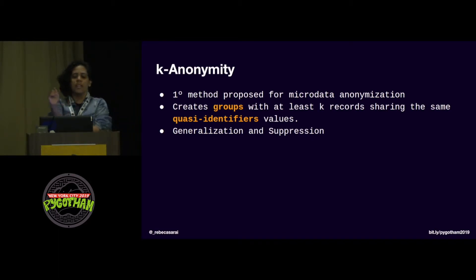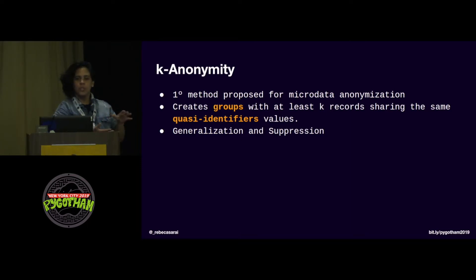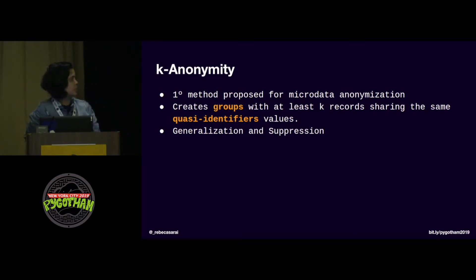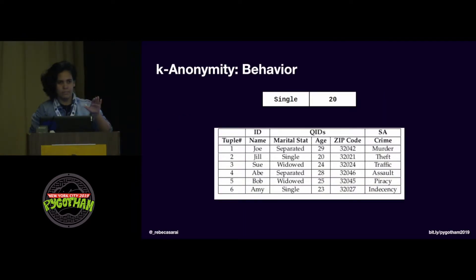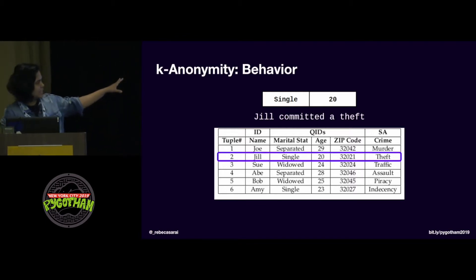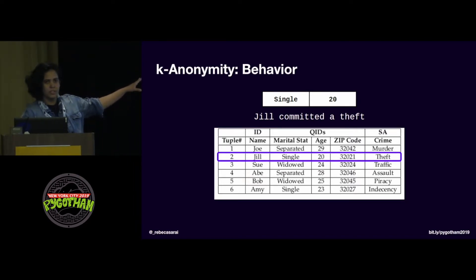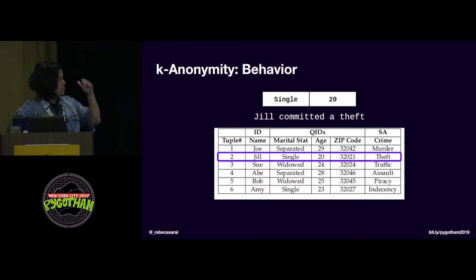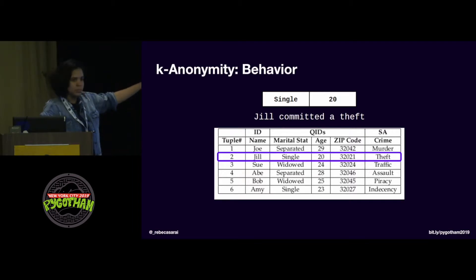The main idea of k-anonymity is to create groups with these quasi-identifiers. You put people into groups so you won't be able to uniquely point to any one person. It does that by using generalization and suppression. Let's see how this works in practice. Suppose I have a person who is single and 20 years old. Just by looking through the table, I can say that Jill is the one I'm looking for — Jill committed a theft. K-anonymity wants to solve this problem so that just by knowing this information, you can't identify a specific person.